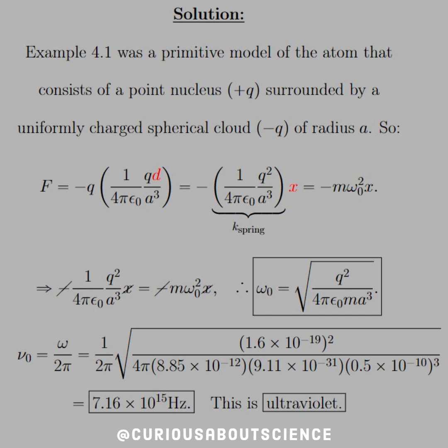Now with that, we see that if we're setting this equal to the spring, that that's equal to negative M omega naught squared X. And we see that omega, the natural frequency, is equal to the square root of Q squared over 4 pi epsilon naught M A cubed.